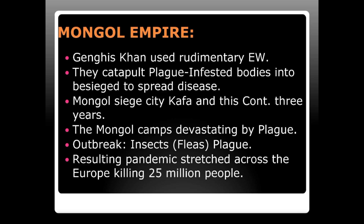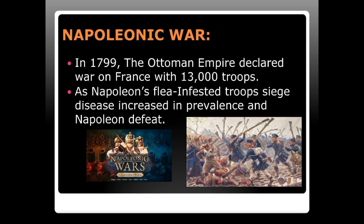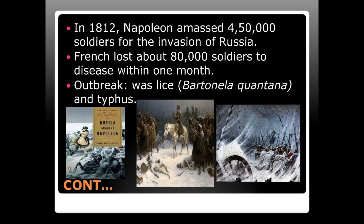During the Napoleonic Wars, in 1799, the Ottoman Empire declared war on France, prompting France's invasion of Syria with troops of about 13,000. As Napoleon's forces advanced, disease spread rapidly and Napoleon accepted defeat. In 1812, Napoleon amassed 450,000 soldiers for the invasion of Russia, but the French lost about 80,000 soldiers to disease within one month, the outbreak being louse-borne typhus.